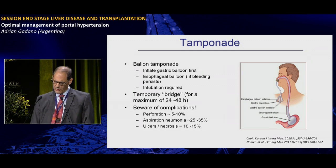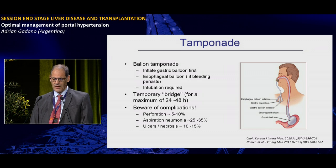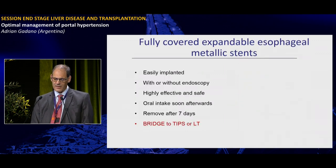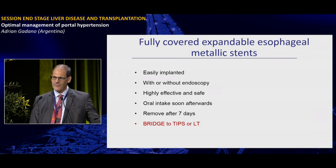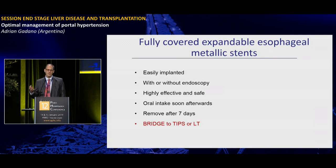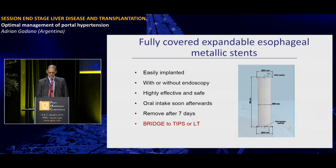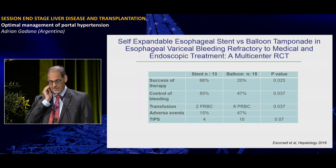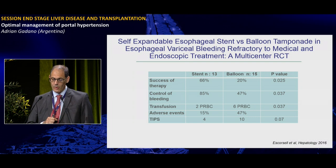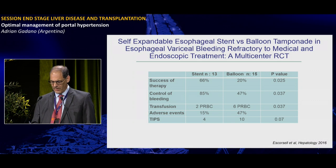Balloon tamponade is associated with complications and can be left in place for no more than 24 to 48 hours. In many centers it has been replaced by fully covered expandable metallic stents, which are easier to implant, effective, safe, and can be left for up to seven days — serving as a bridge to TIPS or liver transplantation. A small study demonstrated greater success with stents versus balloon, including more bleeding control, fewer infusions, fewer adverse events, and less need for TIPS.